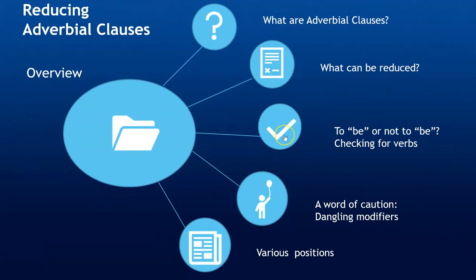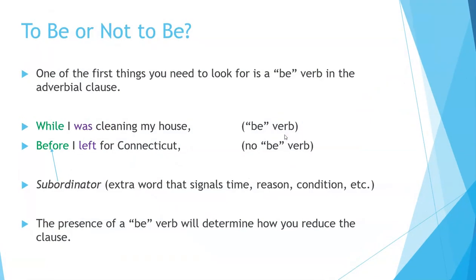To be or not to be — checking for verbs. One of the first things you need to look for is a be-verb in the adverbial clause. For example, 'while I was cleaning my house' — there is a be-verb here: the word 'was.' But 'before I left for Connecticut' has no be-verb. The subordinator is the extra word that signals time, reason, condition, etc. The presence of a be-verb will determine how you reduce the clause.